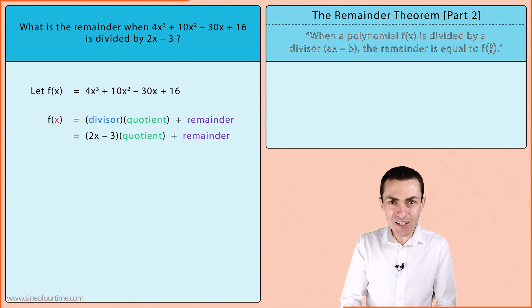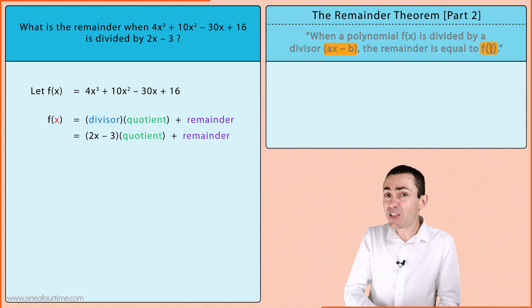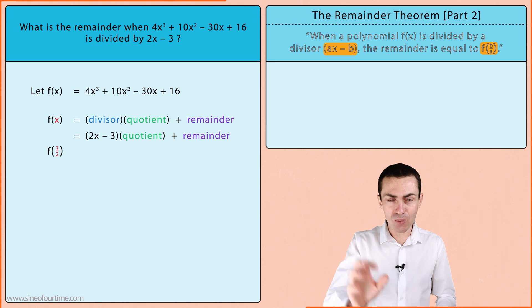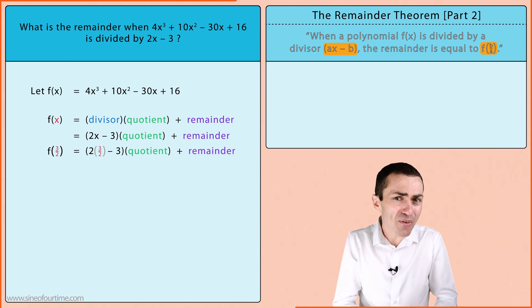As we can see the divisor is of the form ax minus b which means that we need to use the adjusted version of the remainder theorem and substitute b over a in place of x. In this case 3 over 2. In other words we substitute the value of x that makes the divisor equal to zero.